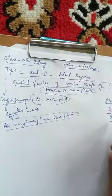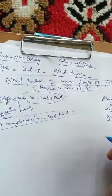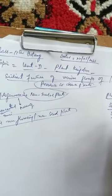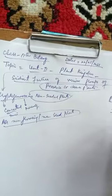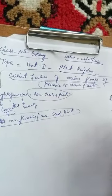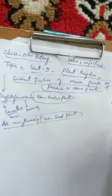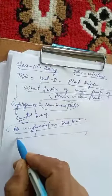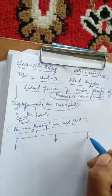Phanerogamae are also known as Spermatophytes — 'sperm' means seeds and 'phyton' means plants. Since these plants produce seeds, these seed-bearing plants are known as Phanerogamae or Spermatophytes. The Cryptogamae, that is non-seed plants, have been further divided into three classes: Thallophyta, Bryophyta, and Pteridophyta.